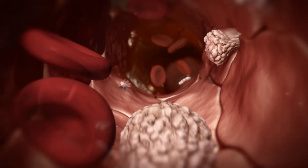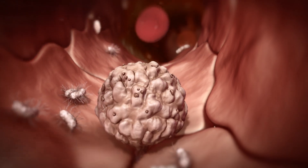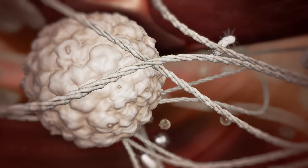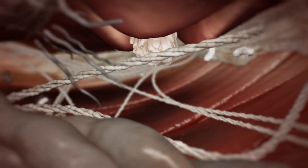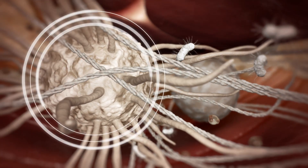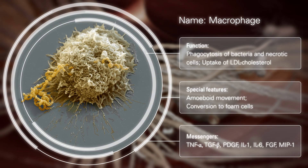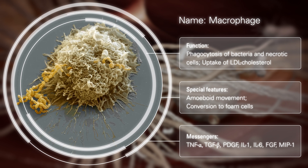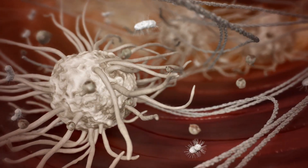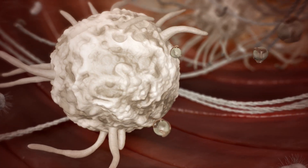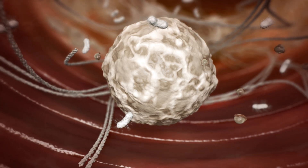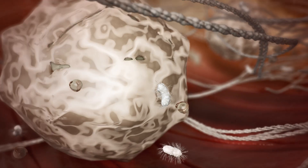The next step in atherogenesis is the formation of so-called fatty streaks. Monocytes migrate into the vascular wall, differentiate into macrophages, and take up oxidized LDL cholesterol, turning into foam cells. Periodontal bacteria like P. gingivalis may promote the formation of fatty streaks by increasing monocyte migration, the oxidation of LDL, and the uptake of oxidized LDL by macrophages.